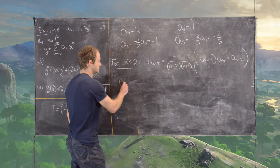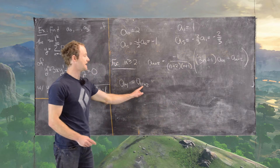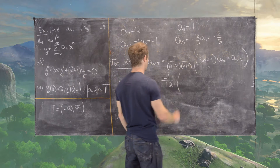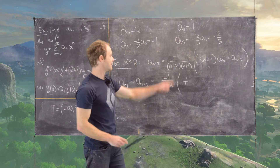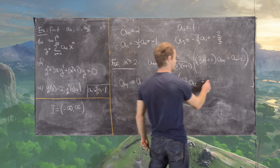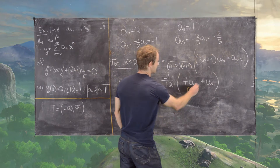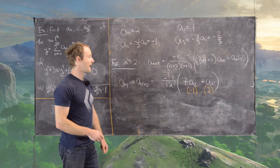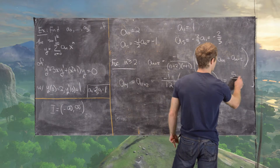Let's calculate a_4, which corresponds to n=2 in the recursion. We get a_4 = −1/(4·3) · [(3·2+1)·a_2 + a_0] = −1/12 · [7·(−1) + 2] = −1/12 · (−5) = 5/12. So a_4 = 5/12.